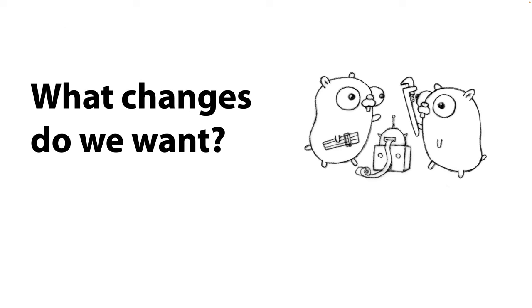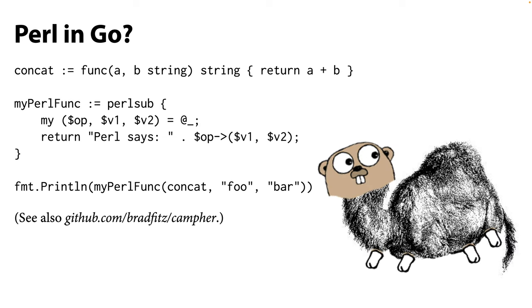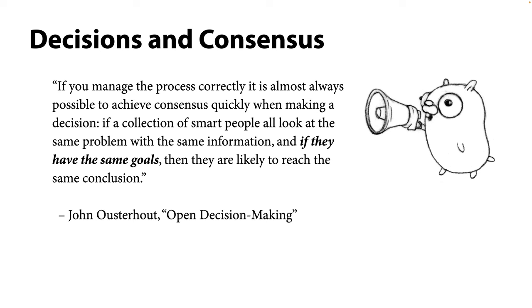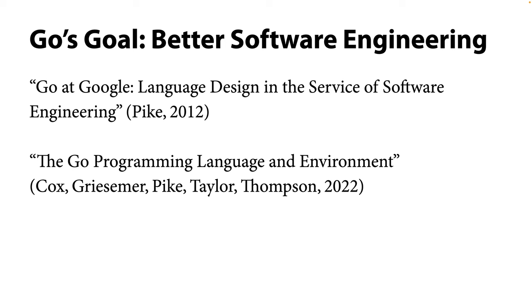What kinds of changes do we want for Go? If we don't agree on this basic point, we can't agree on specific changes either. John Ousterhout wrote a wonderful document titled Open Decision Making. One of his most important points is: if a collection of smart people look at the same problem with the same information and have the same goals, they're likely to reach the same conclusion. Go's goal is better software engineering, especially at scale. Nearly all of Go's distinctive design decisions are aimed at that.